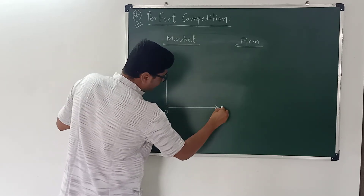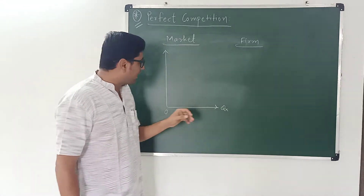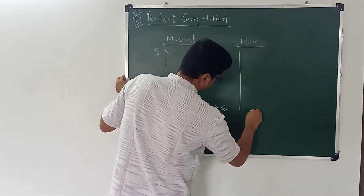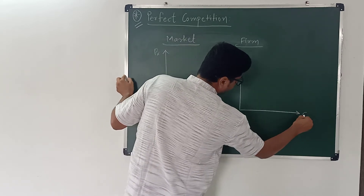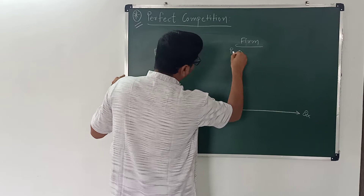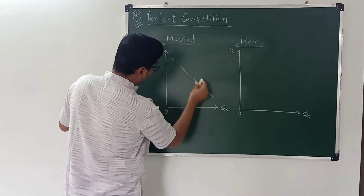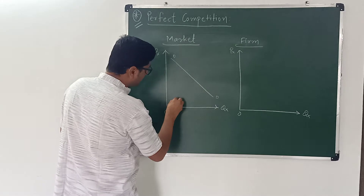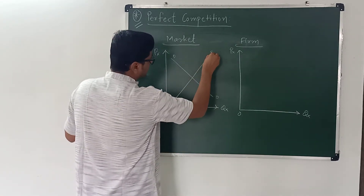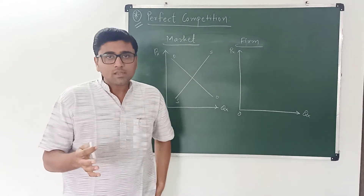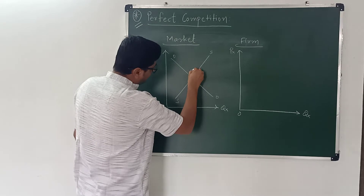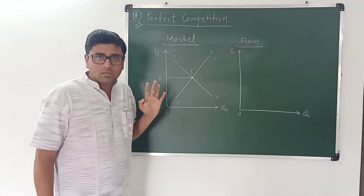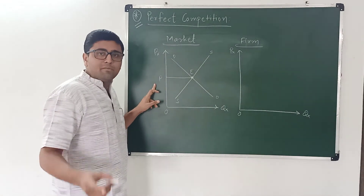Here, quantity of commodity X is measured on the X-axis, and price of commodity X is measured on the Y-axis. We know that the demand curve is a downward sloping curve, which shows the inverse relationship between price and quantity demanded. The supply curve is an upward sloping curve, which shows the positive relationship between price and quantity supplied. This is the equilibrium point, and OP is the equilibrium price.